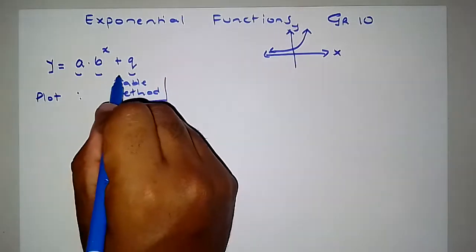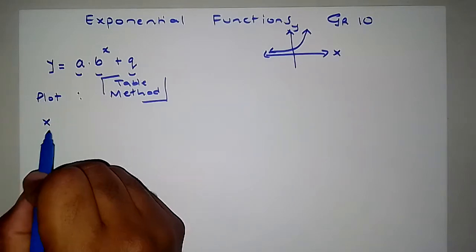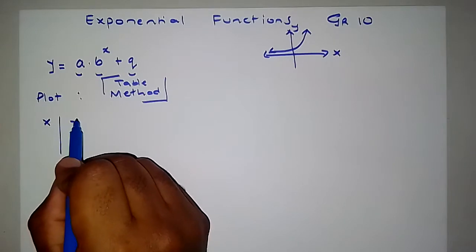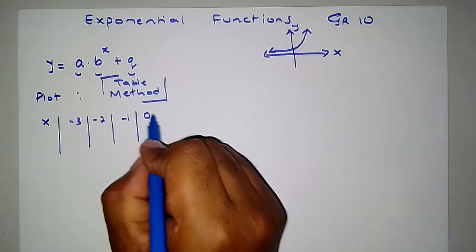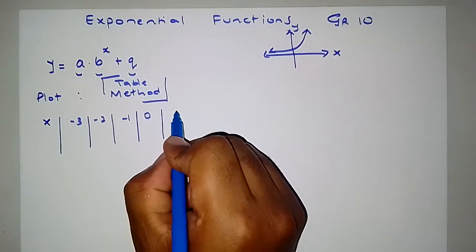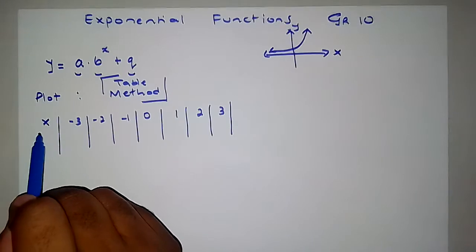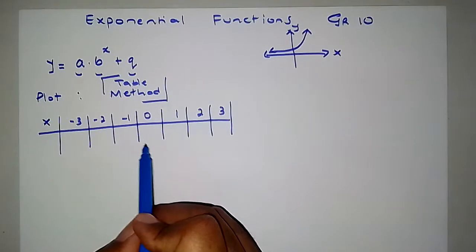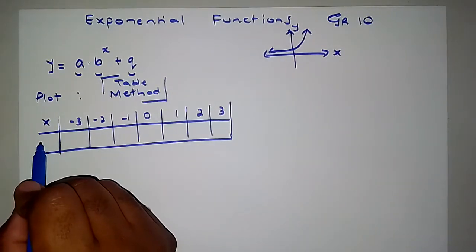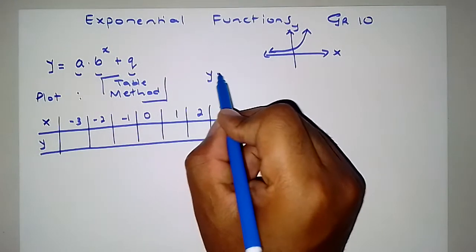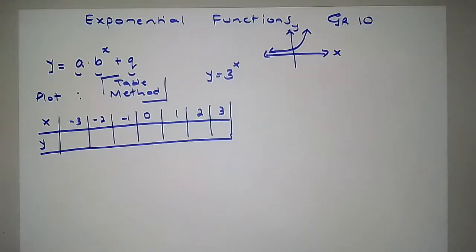In the table method we just choose a bunch of x values. We've got negative three, negative two, negative one, zero, one, two, three — just enough values to give us an appreciable amount of the graph. Let's say y = 3ˣ as an example of a simple exponential function.